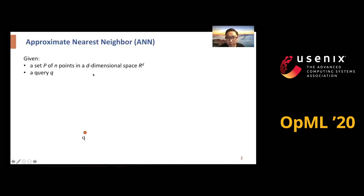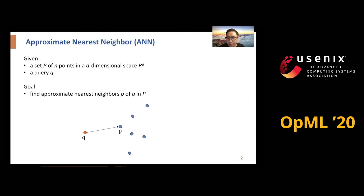Given a set of points in a D-dimensional space and a query point, our goal is to find approximate nearest neighbors in the set P. From this figure, you can see that P is the nearest neighbor of the query point Q compared to other points. The distance between these two points is calculated by some distance function, for example, Euclidean distance.